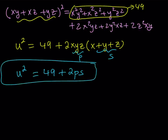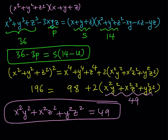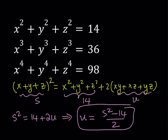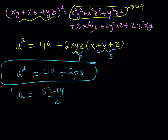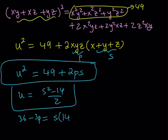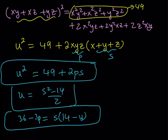So now we have a system in three variables S, U, and P. We have: u squared equals 49 plus 2PS; 36 minus 3P equals S times (14 minus U); and U equals (S squared minus 14) over 2. The idea is to replace U with the expression in S to get relationships between P and S, then combine them and solve.